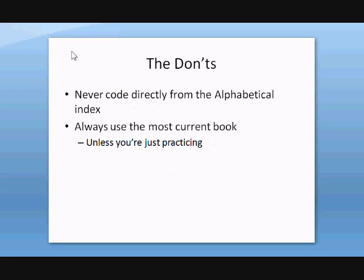Before we get into the book, one of the first things you have to recognize are the do's and the don'ts — really just more the don'ts. This is something that people start to get lazy about, especially when they start getting comfortable with the book. Do not go directly from the alphabetical index. Always code from the tabular list, which is Volume 1. Do not code from the alphabetical index alone.